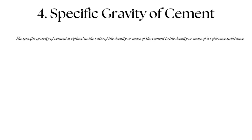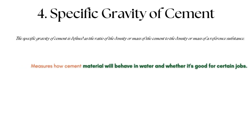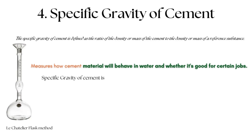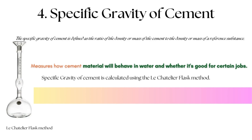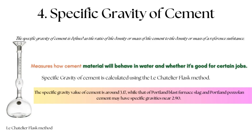Specific Gravity of Cement: The specific gravity of cement is defined as the ratio of the density or mass of the cement to the density or mass of a reference substance. By knowing the specific gravity, we can tell how a material will behave in water and whether it's suitable for certain jobs like building. Specific gravity of cement is calculated using the Le Chatelier flask method, which can be done either on-site or in the laboratory. The specific gravity of cement is around 3.17, while Portland Blast Furnace Slag and Portland Pozzolana Cement may have specific gravities near 2.90.